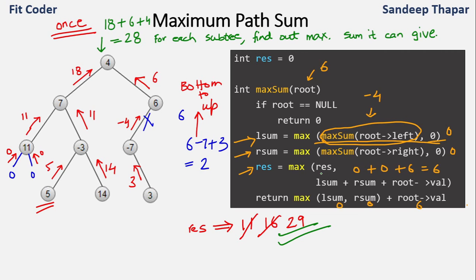The code is straightforward. For each node we check whether including it increases the sum or whether we should skip it. We traverse bottom-up through every node. The time complexity is O(n) since we visit each node only once.